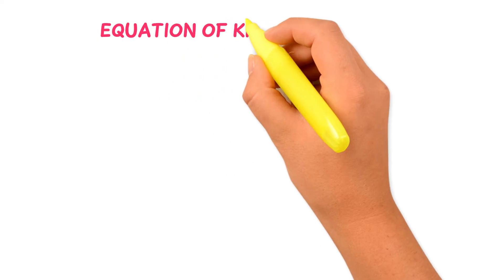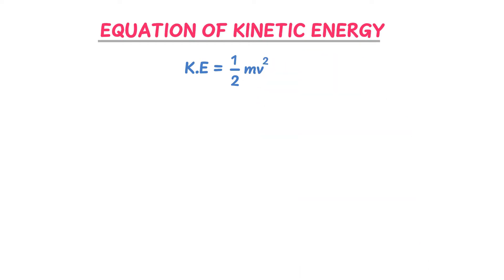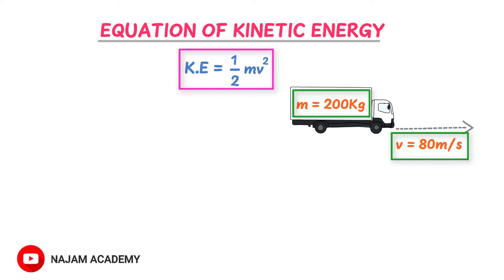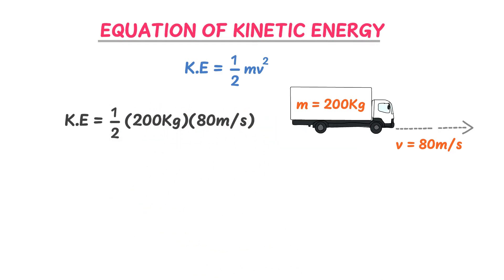The equation for kinetic energy is: KE = ½mv². For example, consider a moving truck with mass m = 200 kg and velocity v = 80 m/s. We simply plug in the values: KE = ½ × 200 kg × (80 m/s)². After calculation, kinetic energy equals 6.4 × 10⁵ joules.